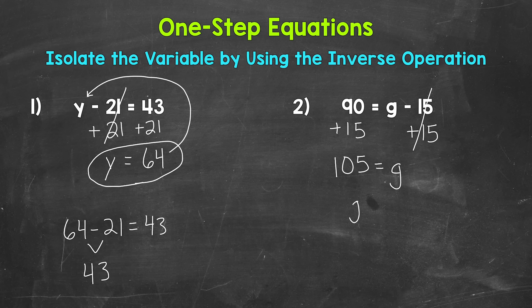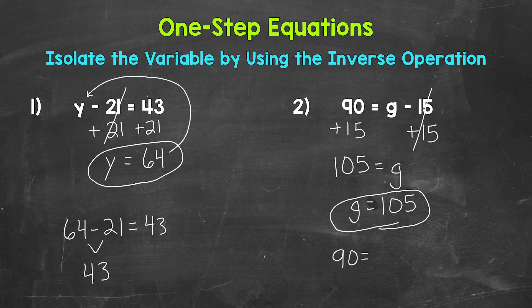g equals, and then on the left side of the equation, 90 plus 15 equals 105. So g equals 105. And we can rewrite this with the variable coming first. That is our solution. Let's check that solution by plugging 105 in for g and seeing if this works. So 90 equals 105 minus 15. 105 minus 15 does equal 90. So our solution is correct. g equals 105.